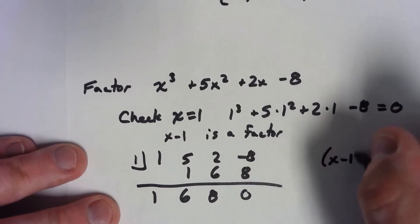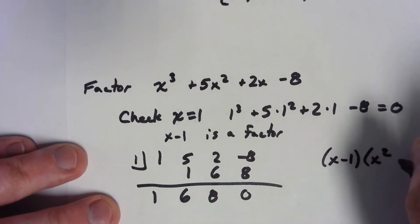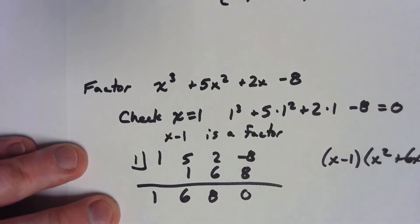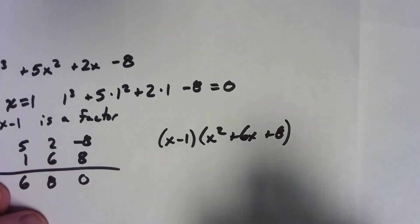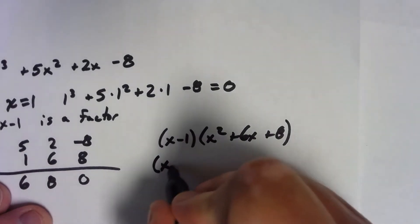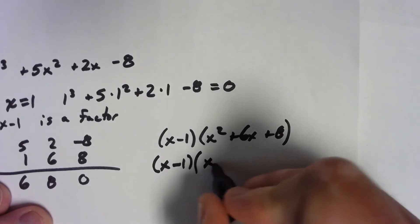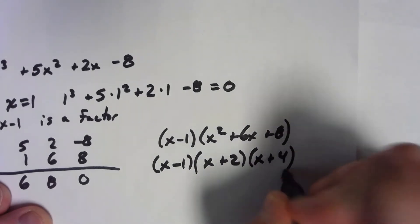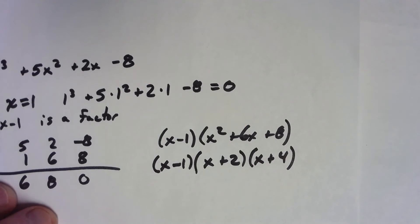So, this is x minus 1 times x squared plus 6x plus 8. And, of course, that factors very easily as x plus 2, x plus 4. And, there we go. From nothing, not knowing what any zeros were, using this rational root theorem, we were able to break this thing down to the point where it was very easy to factor.